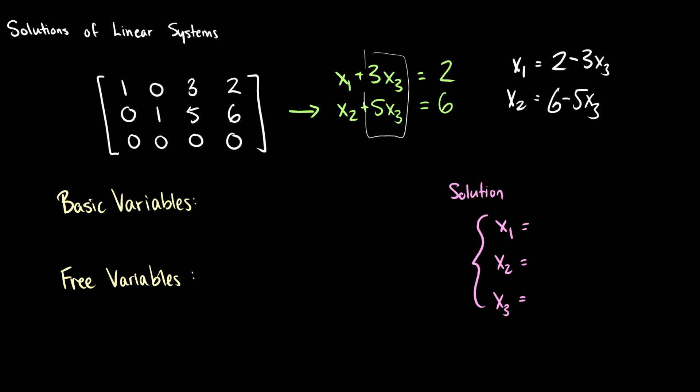So we have terms for these variables. x1 and x2 are called basic variables, because they have solutions. x3 in this case is called a free variable, because the number that we give to the free variable determines the value of the basic variables.